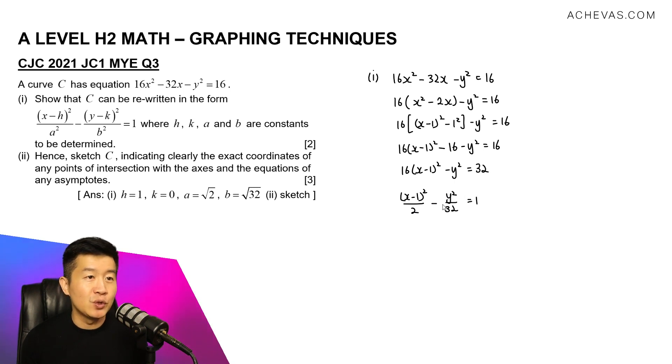And what we want to do is to re-express this further so that it can look exactly like the format. So this will be (x - 1)²/(√2)² - (y - 0)²/(√32)² = 1. And now we have the format that the question wants us to show.